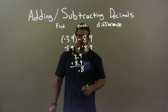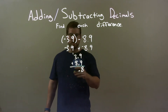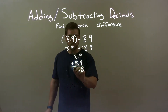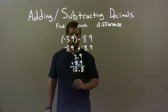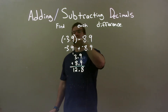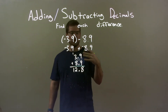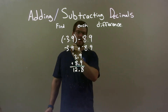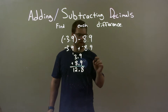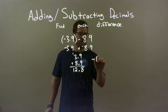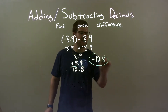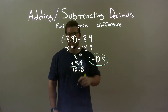1 plus 3 is 4, plus 8 is 12. So we have 12.8, but we knew the number had to be negative because a negative plus a negative is a negative. So we have negative 12.8, and that is our final answer.